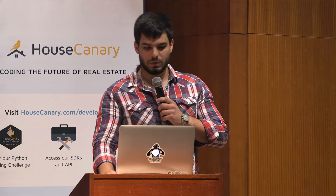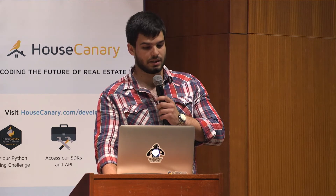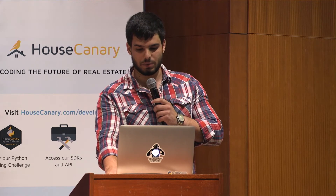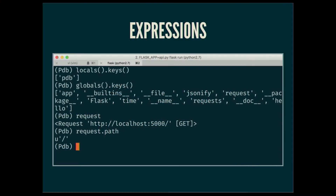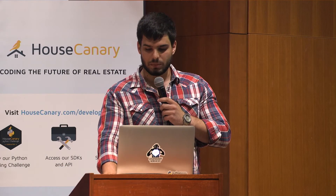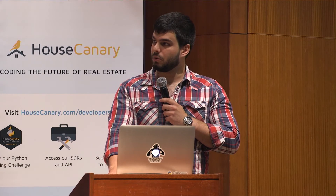You notice that it's right after the breakpoint that we added earlier, which means the request hasn't happened yet. But first, we can actually write a couple expressions. We can look at the local variables, we have globals. We notice that there is the request variable here, which is what Flask exposes for the API. We can take a look at the object, maybe look at an attribute.